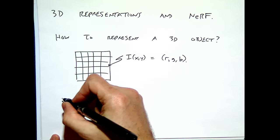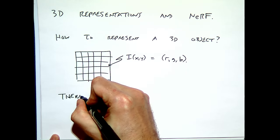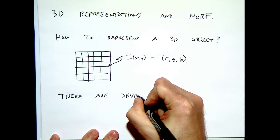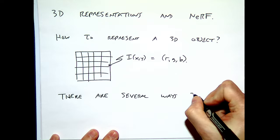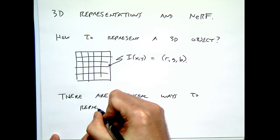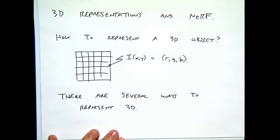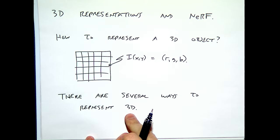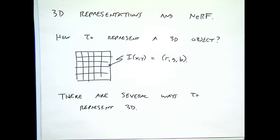There are several ways to represent 3D. Some you've probably heard of and some maybe not. The right way also depends on whether we're looking to represent a single object — like an object on your desk — versus capturing a 3D environment, like standing in front of a classroom. The type of representation for a room may not be the same as for a teapot on your desk.